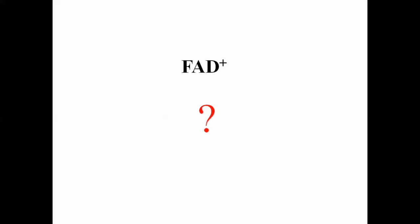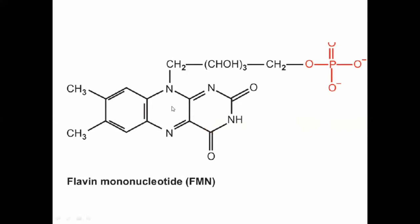So what would be the flavin adenine dinucleotide? Flavin adenine dinucleotide: F means flavin, and flavin together with the ribitol forms riboflavin, which is vitamin B2. Adenine is one of the nitrogenous bases, the 6-aminopurine. Dinucleotide means it is the combination of two nucleotides. We will study one nucleotide, then the second, and then how they are joined together. This is the flavin group — the isoalloxazine ring structure together with the ribitol.